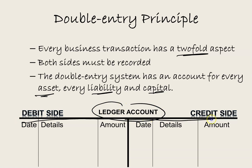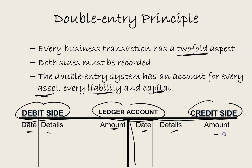A ledger account is like a large capital T. On the debit side you have three columns: date, details and amount. And on the credit side you have the same three columns: date, details and amount. The debit side is the left-hand side and the credit side is the right-hand side. There will be a ledger account for each asset, liability and capital.